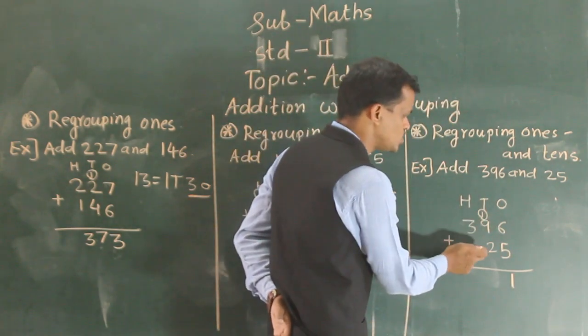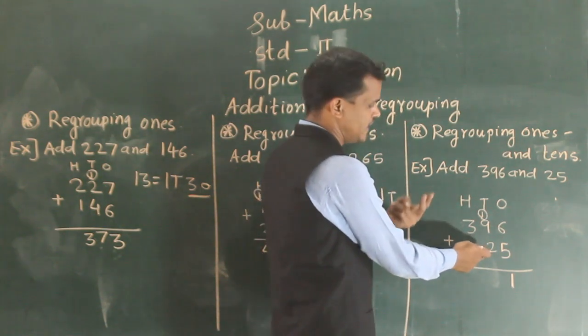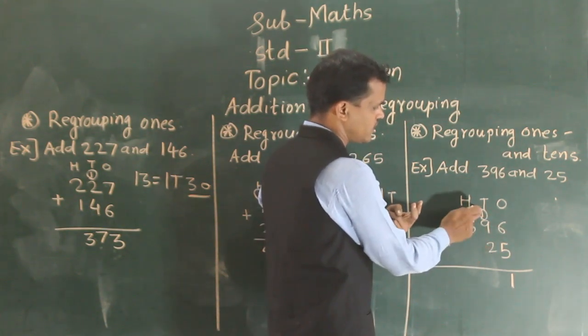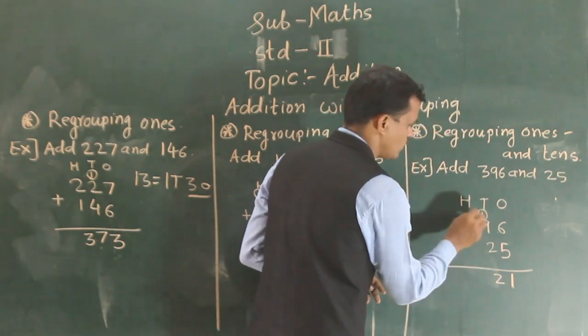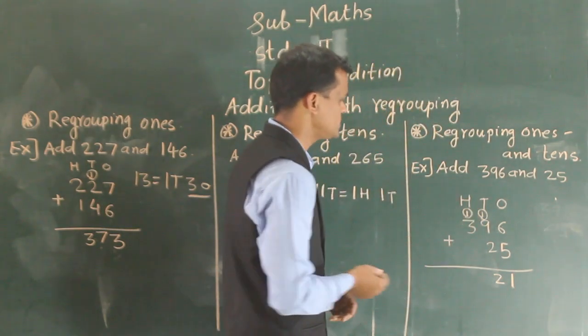Now 9 plus 2, 9, 10, 11. 9 plus 2, 11 and 1 carry, so 12. So 2 right here and 1 carry to the hundreds place.